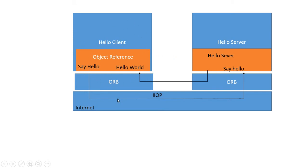The client request goes through the ORB interface via the Internet Inter-ORB Protocol to the server's ORB interface. On the client side, there are elements like dynamic invocation and a stub. The ORB interface handles interaction — when the request reaches the server machine through the ORB interface, the stub facilitates communication between client and server.